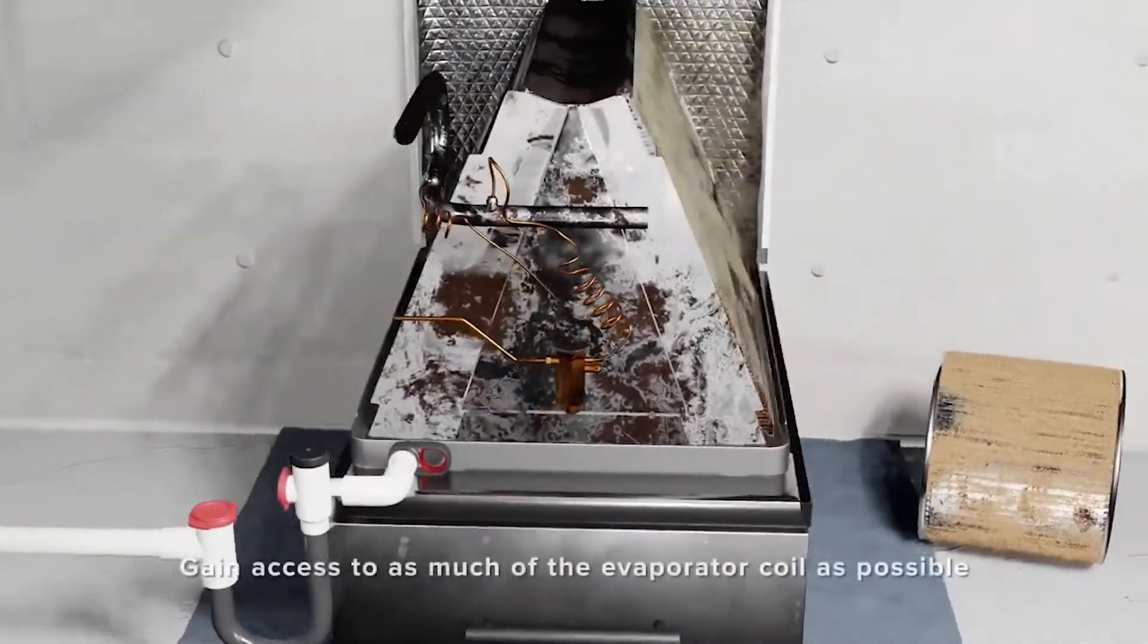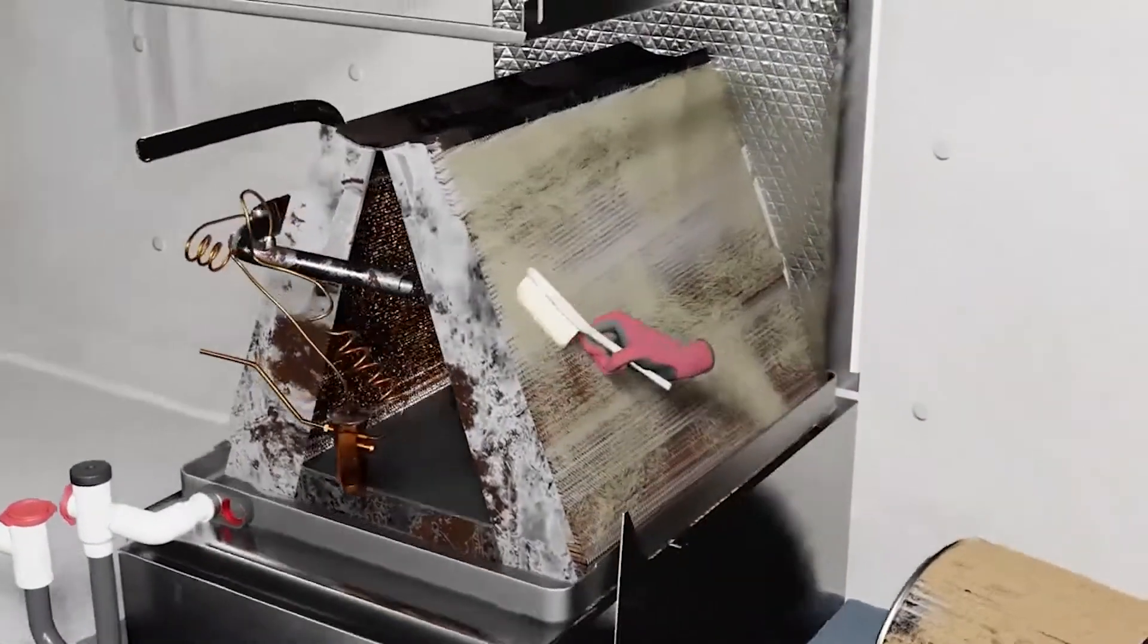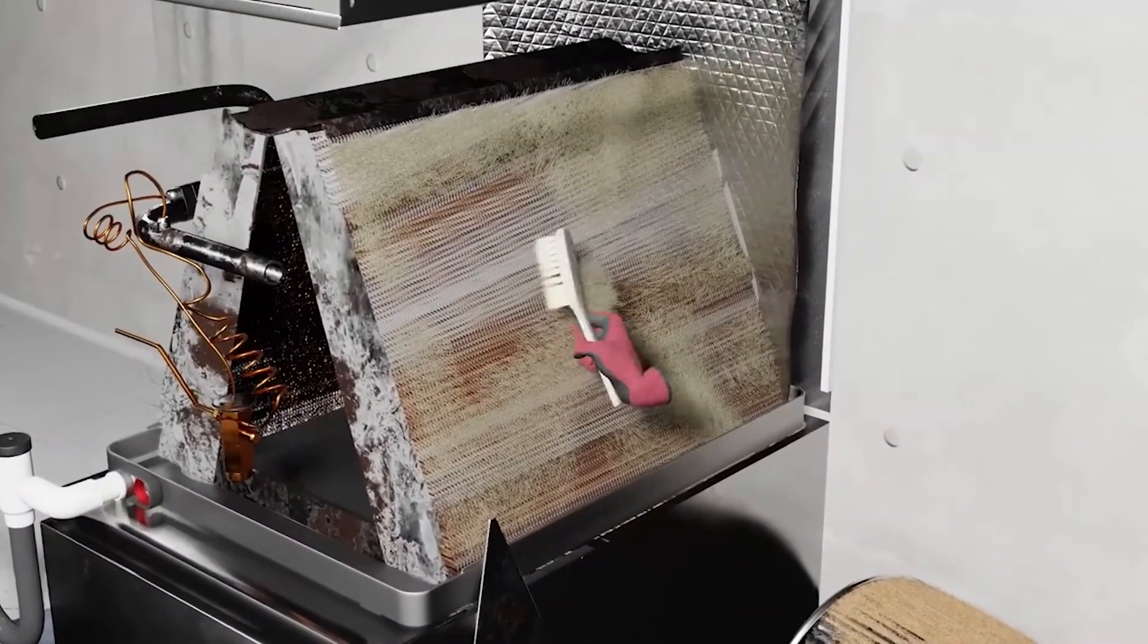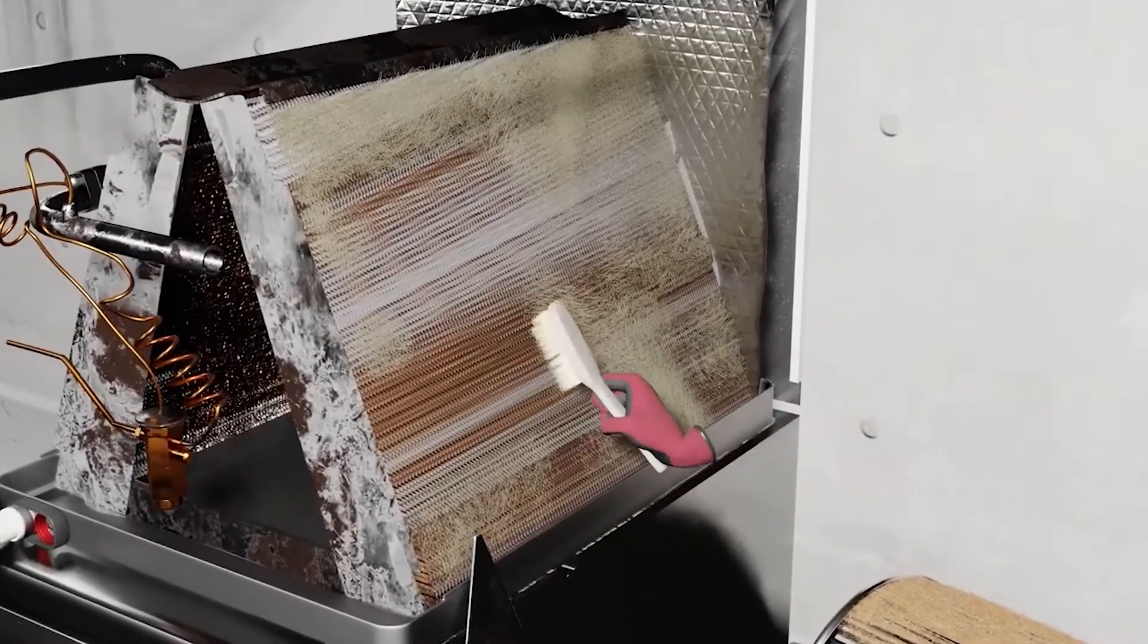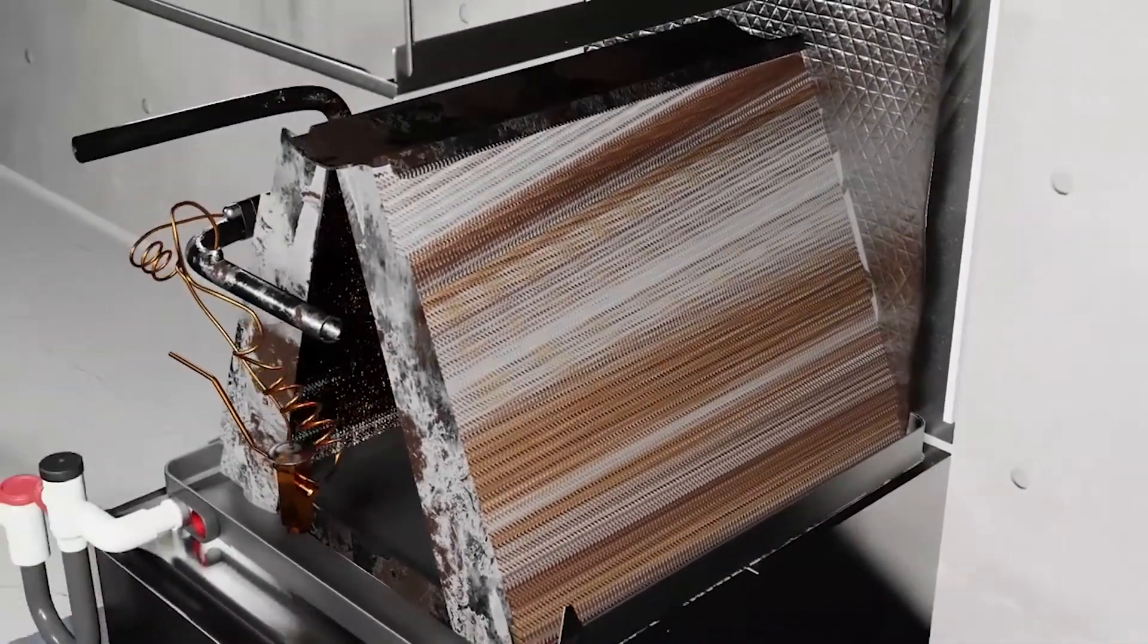In some cases, you can remove the triangular panel at the front of the coil to access the underside. In other cases, you may be able to gain access from underneath. We recommend using a soft bristle brush to clean as much of the solid debris as possible before beginning with chemical cleaners.